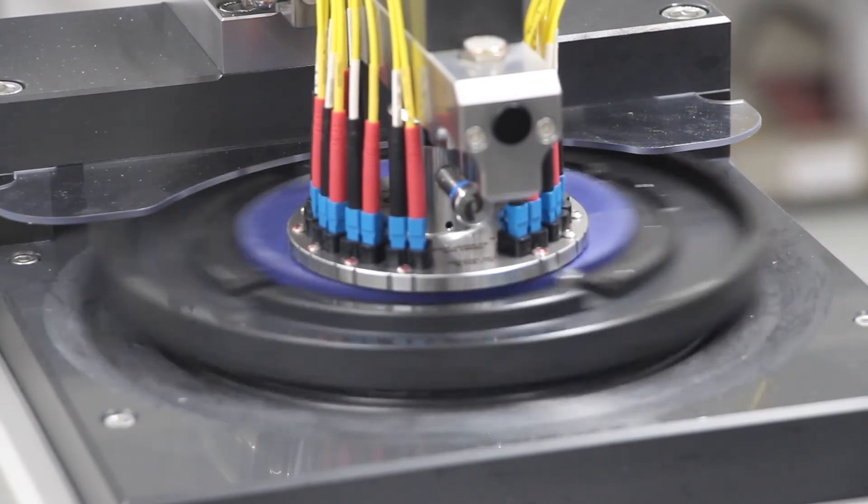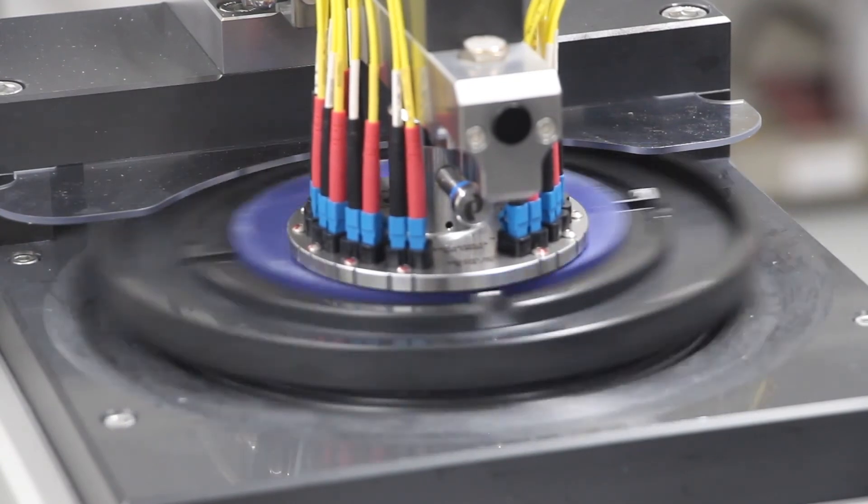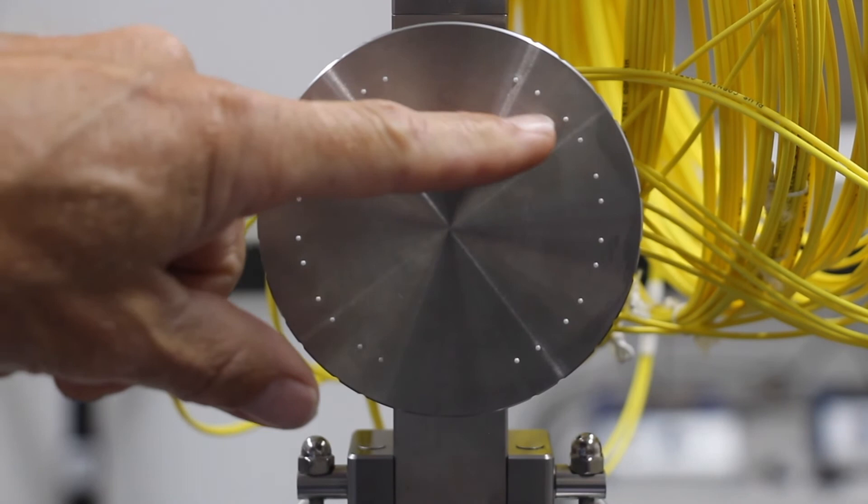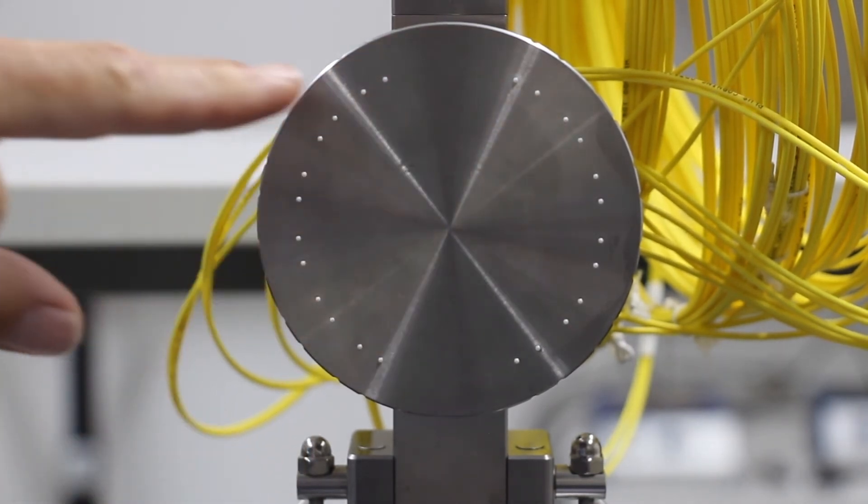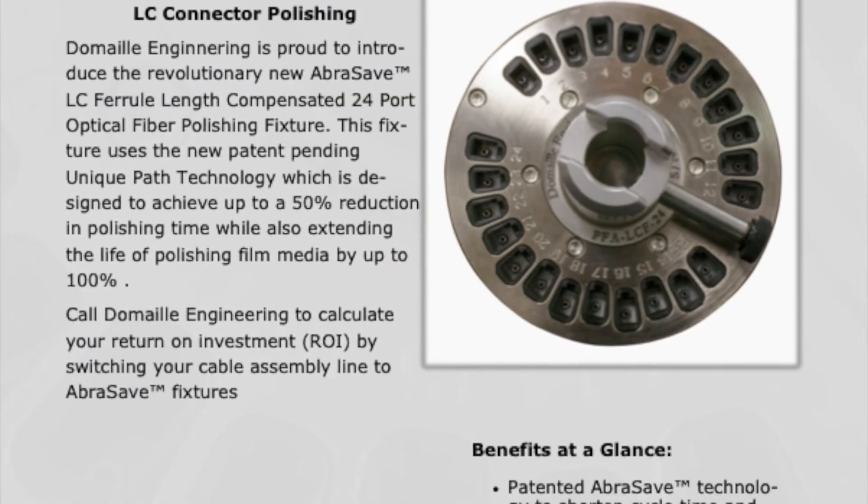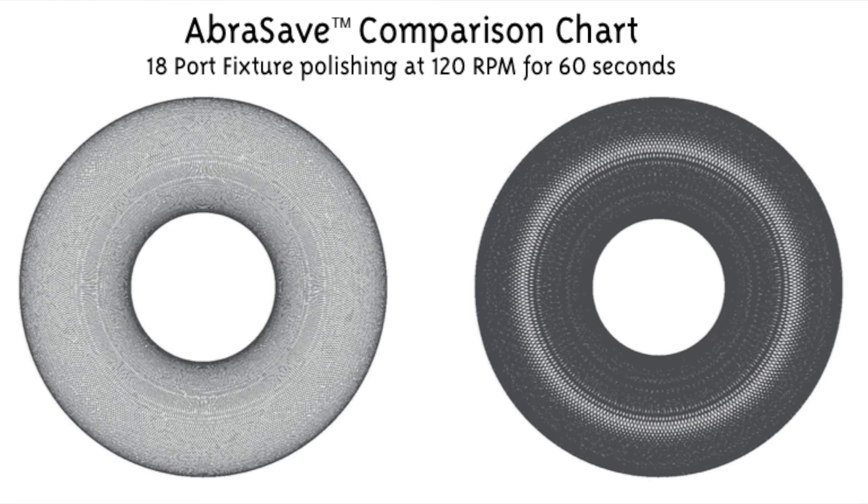Domeo has taken this a step further and developed the abrasive fixture line. As the name implies, it saves abrasive material. Traditional fixture ports are arrayed in a circle for ease of manufacturing. Abrasive fixture ports are offset from each other, creating a unique film path, reducing film wear and scratches, and extending film life.